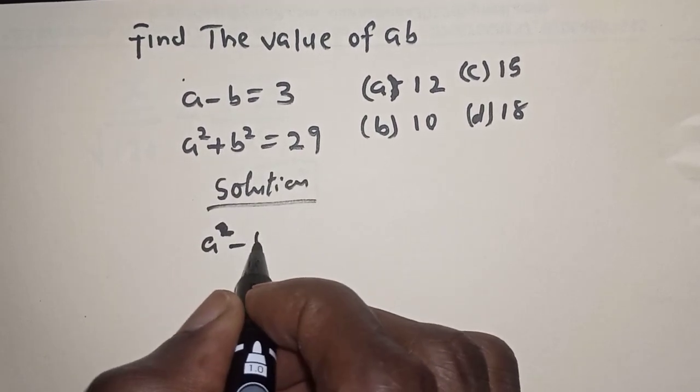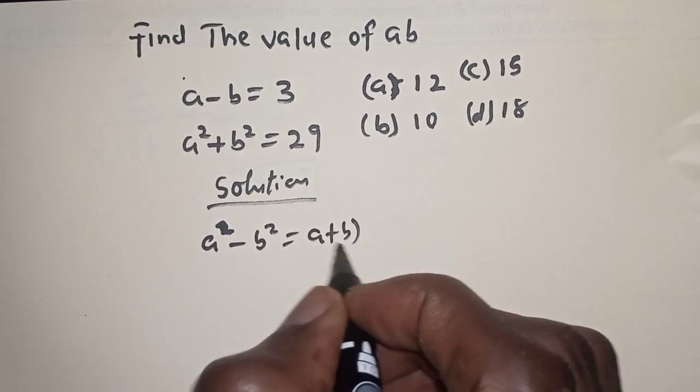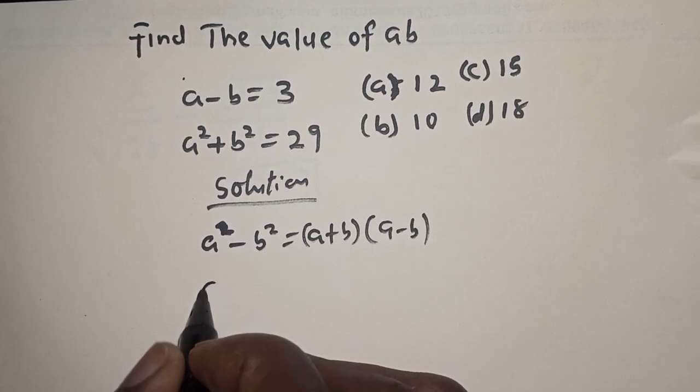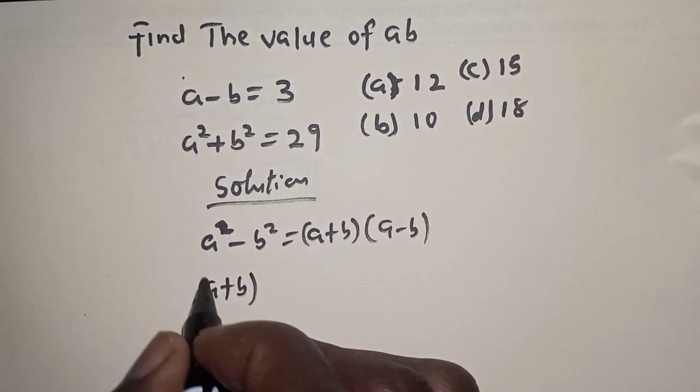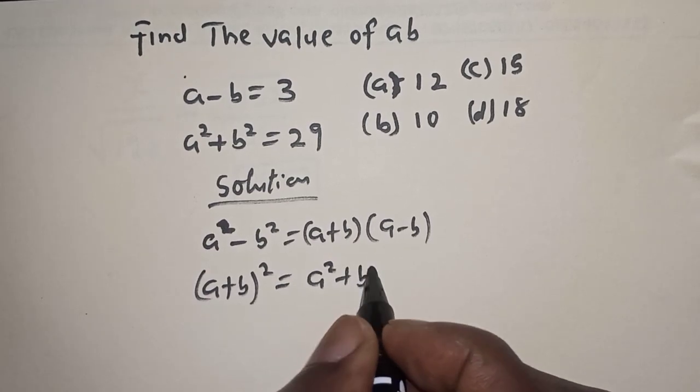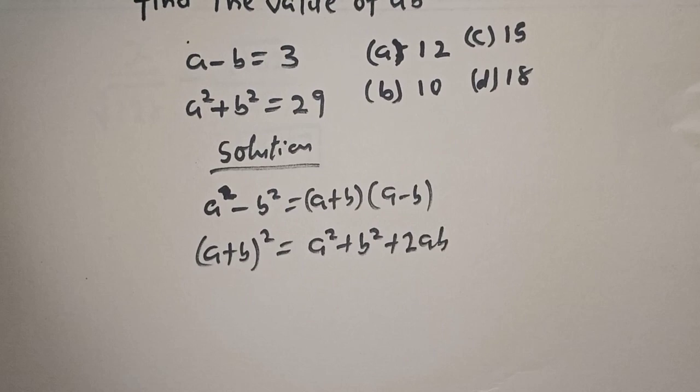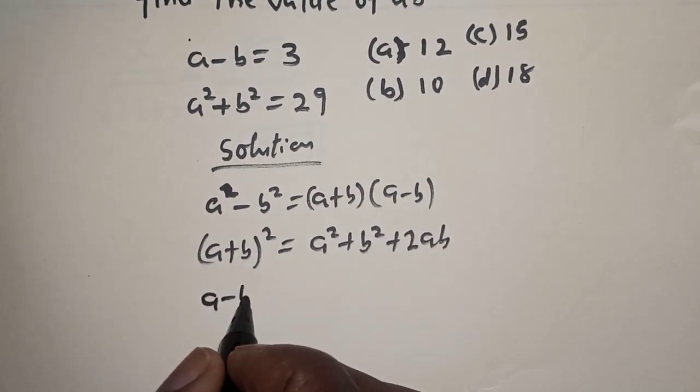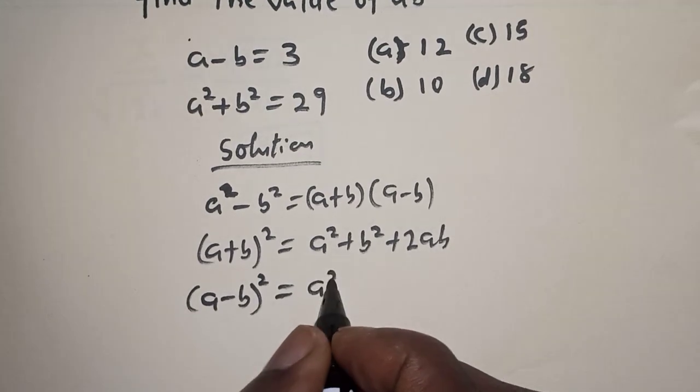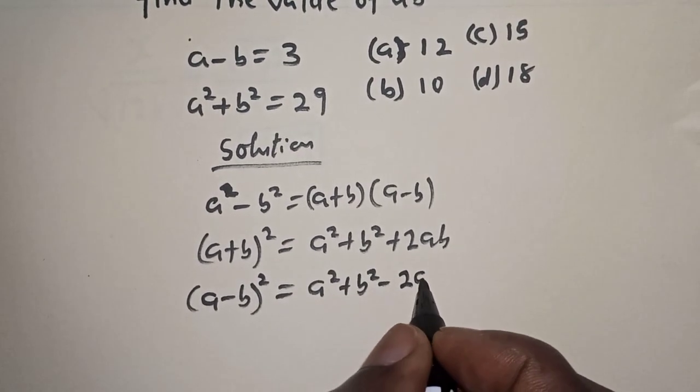Solution. A square minus B square is equal to A plus B bracket A minus B. Then A plus B square is equal to A square plus B square plus 2AB. Also, A minus B square is equal to A square plus B square minus 2AB.